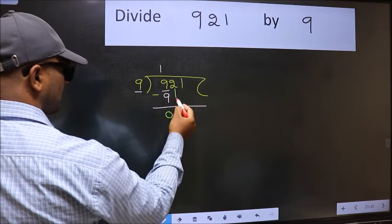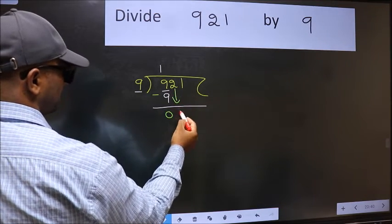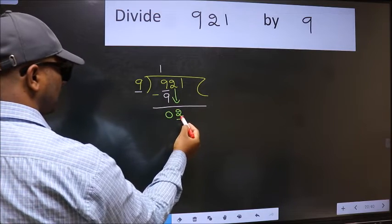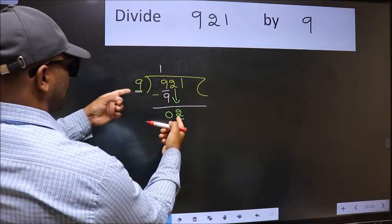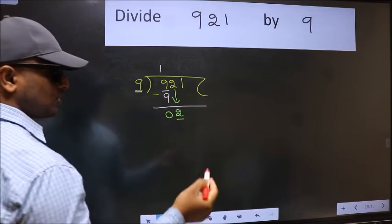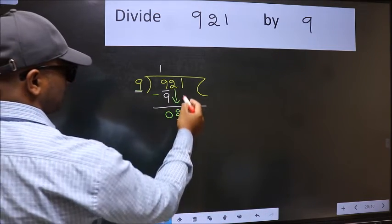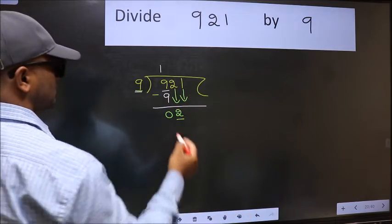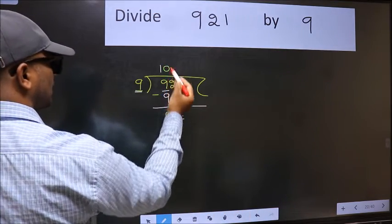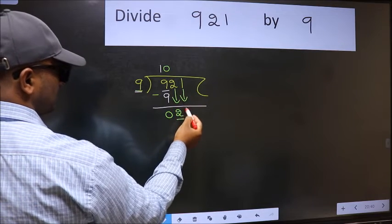After this, bring down the next number, 2. Now here we have 2 and here 9. 2 is smaller than 9, so we should bring down the second number. And the rule to bring down the second number is we should put 0 here. Then only we can bring this number down.